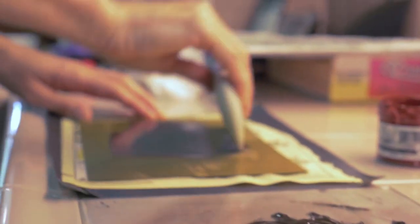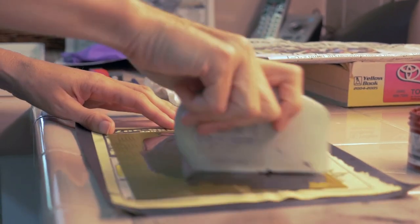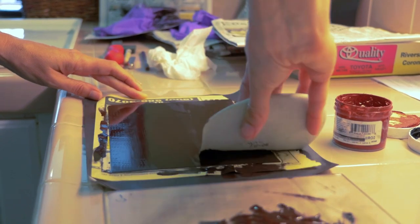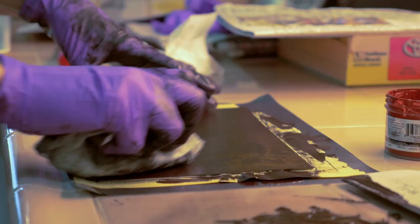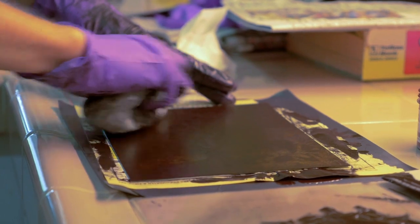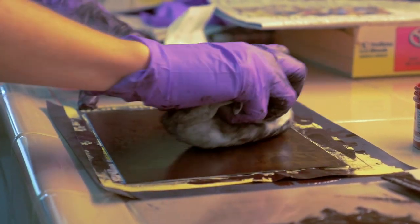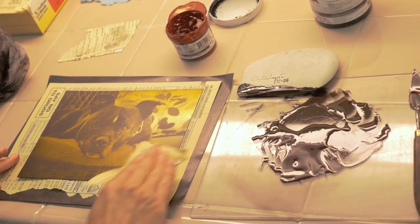So this is what we do. We just kind of put the ink all over, and we're pressing it into the lines of the plate. We're also pressing the ink into the lines just a tad more. Looks good. So we're going to move over to the press now.